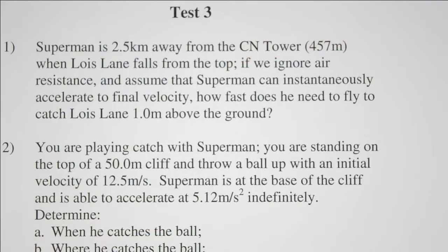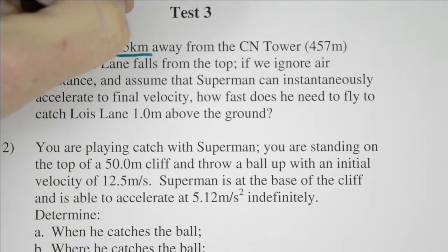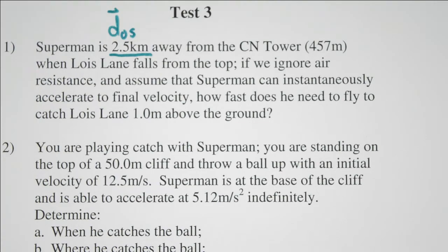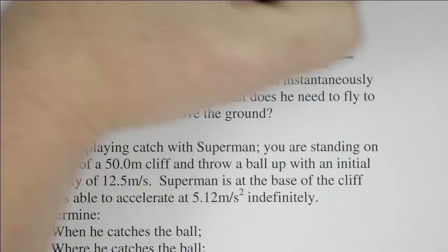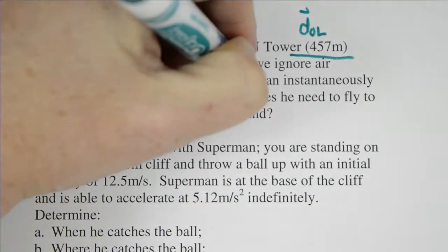We're going to start by breaking down the question. So we see that Superman is 2.5 kilometers away from the CN Tower. This gives us information about his initial position. We also see that the CN Tower is 457 meters tall. This tells us about Lois Lane's initial position.